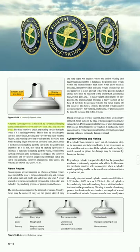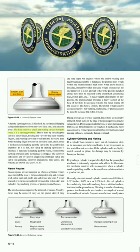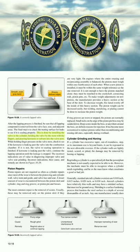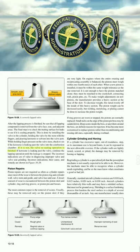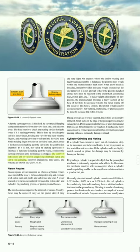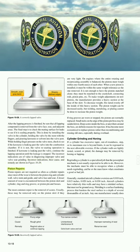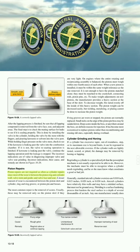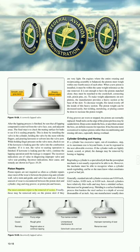After the lapping process is finished, be sure that all lapping compound is removed from the valve face, seat, and adjacent areas. The final step is to check the mating surface for leaks to see if it is sealing properly. This is done by installing the valve in the cylinder, holding the valve by the stem with the fingers, and pouring kerosene or solvent into the valve port. While holding finger pressure on the valve stem, check to see if the kerosene is leaking past the valve into the combustion chamber. If it is not, the valve reseating operation is finished. If kerosene is leaking past the valve, continue the lapping operation until the leakage is stopped. Piston repairs: Piston repairs are not required as often as cylinder repairs, since most of the wear is between the piston ring and cylinder wall, valve stem and guide, and valve face and seat. A lesser amount of wear is encountered between the piston skirt and cylinder, ring and ring groove, or piston pin and bosses. The most common repair is the removal of scores.